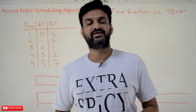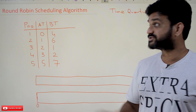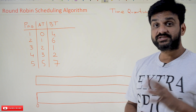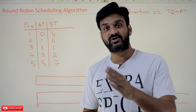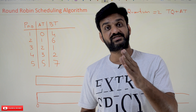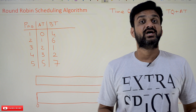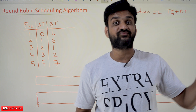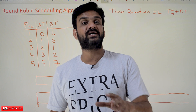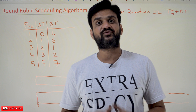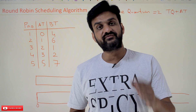Hi, welcome to Learning Monkey. I am Vikram. In this class we'll try to understand the round-robin scheduling algorithm. Concepts related to first-come-first-serve, shortest job first, longest job first, shortest remaining time first, and longest remaining time first have already been explained in our previous videos. If you haven't watched those videos, please watch those and come back. Our suggestion is to follow the entire course playlist for better understanding — the link is in the description below.